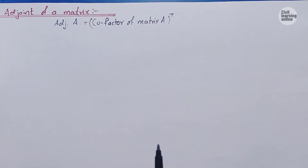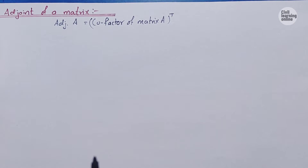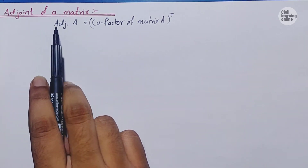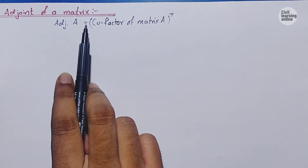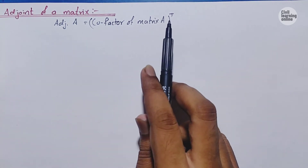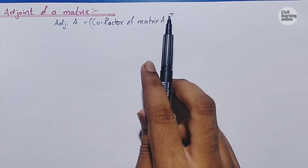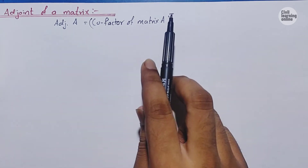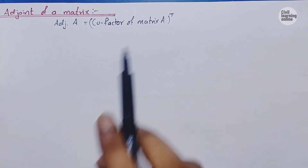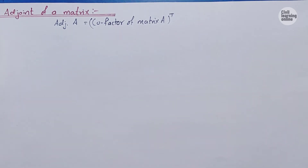Here we have a formula for calculating the adjoint of any matrix. It is given as: the adjoint of a matrix A will be equal to the transpose of the cofactor of matrix A. So the adjoint equals the transpose of the cofactor of A.